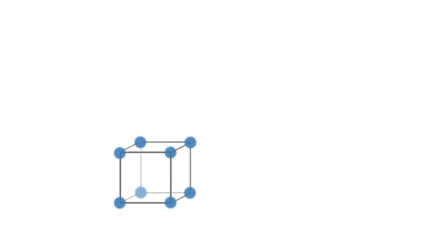First, I'm going to draw a little cube where the corners, the blue ones, are the anions in a simple cubic arrangement. I'll add another one with a cation in the very center. You can see those little orange lines I've drawn indicating that's in the very center of the cube.